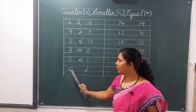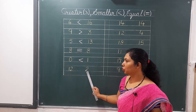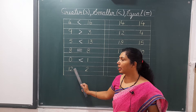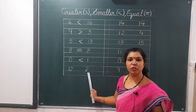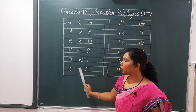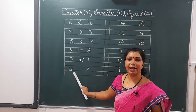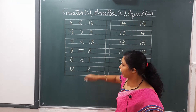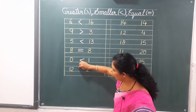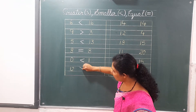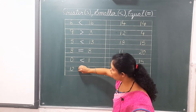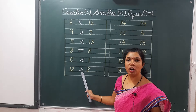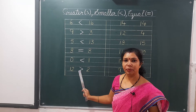Twelve and two. Twelve comes after two, so twelve is greater than two. The mouth will be open towards twelve.